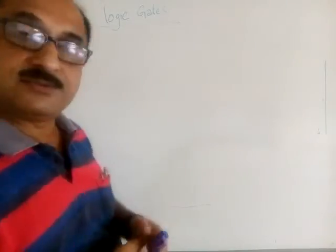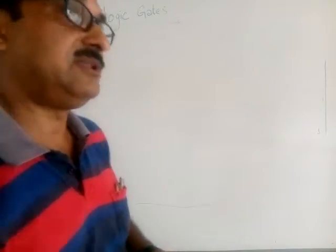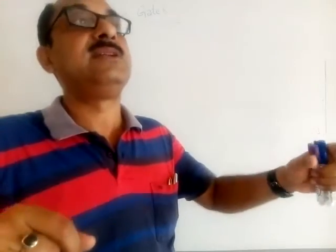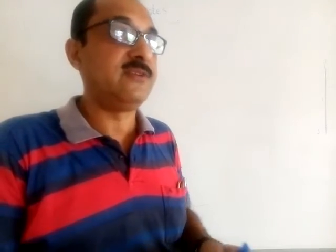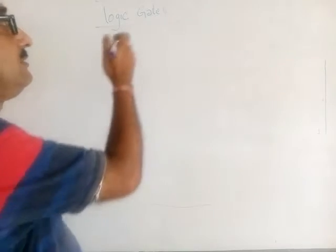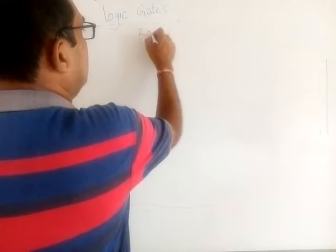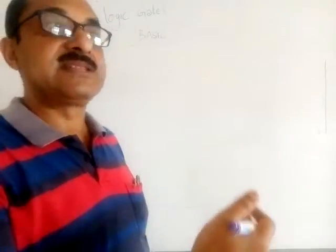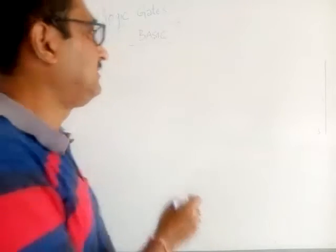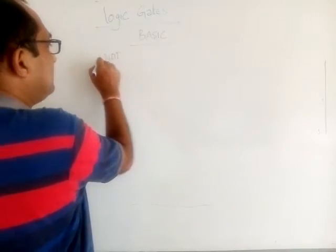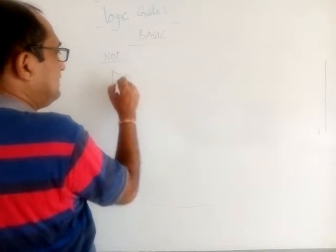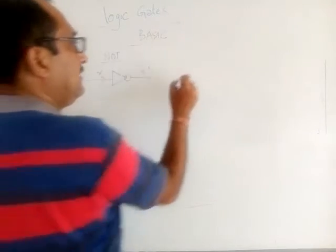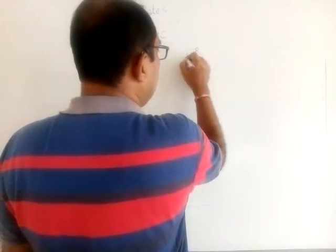We have started logic gates. I told you that these gates are basically imaginary circuits which are used to generate various kinds of output. They basically represent the basic gates. We studied basic gates, which are used to represent various kinds of operators used in boolean algebra. Like we learned the NOT gate — if a current x comes in, it produces the output x complement.